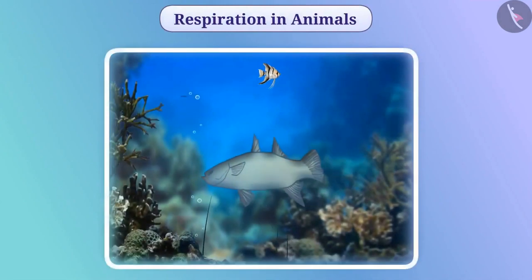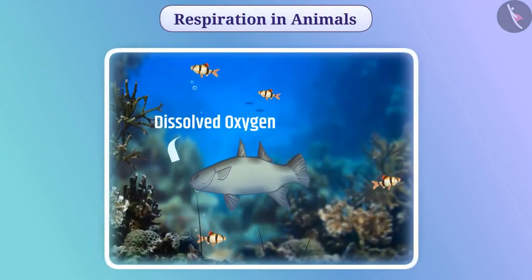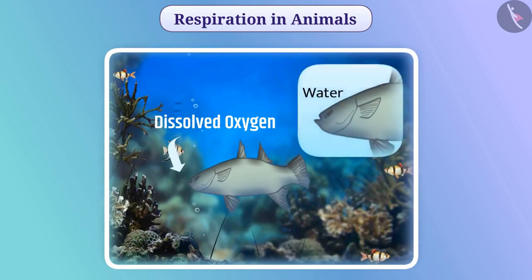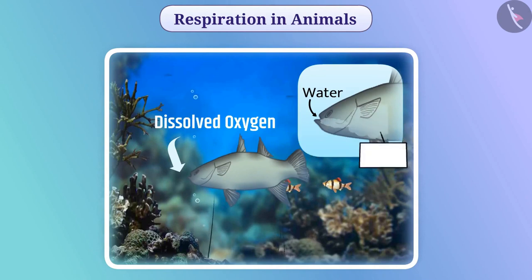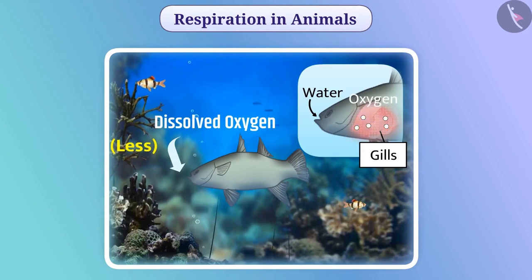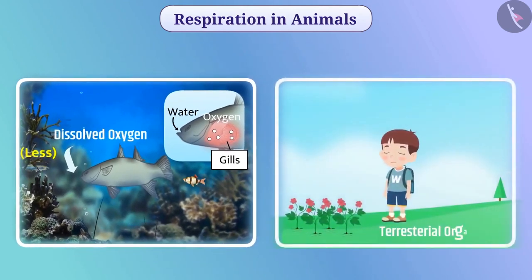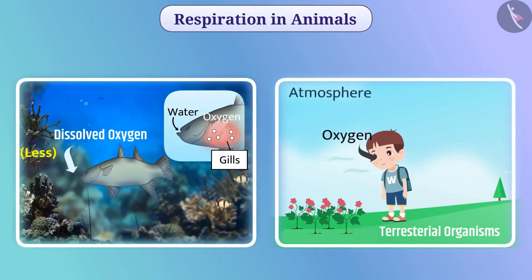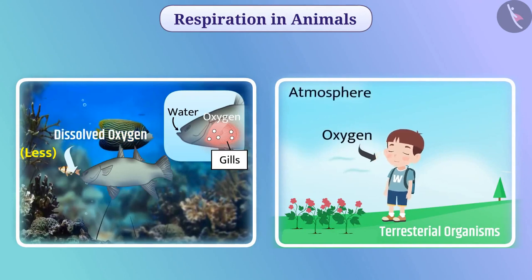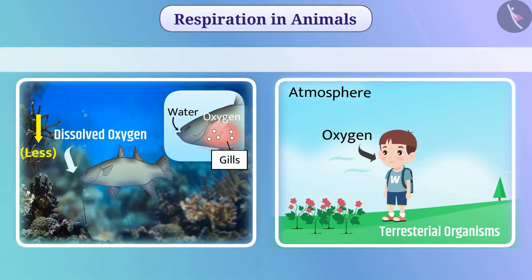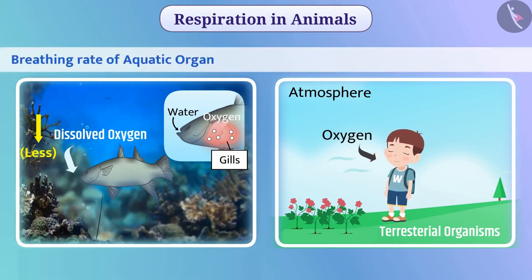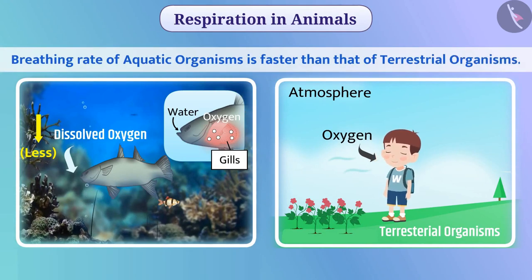Organisms living in water obtain oxygen dissolved in water. Fish take water inside the body from the mouth and forcefully send it through the gills, where blood absorbs the dissolved oxygen. For respiration, terrestrial organisms receive oxygen from the atmosphere. The amount of soluble oxygen present in water is less than that in the atmosphere. Therefore, the breathing rate of aquatic organisms is faster than that of terrestrial organisms.